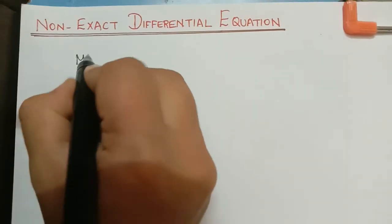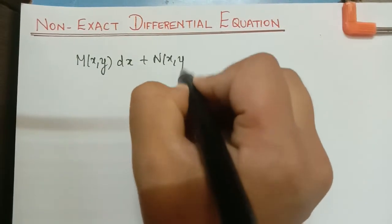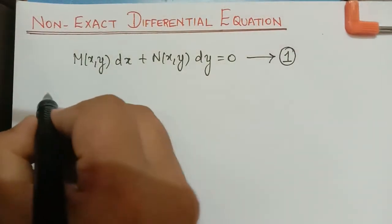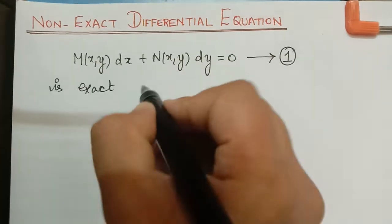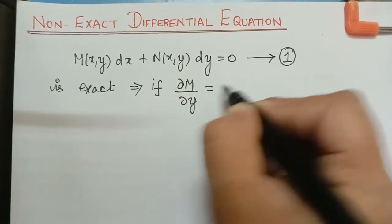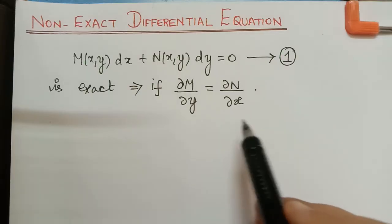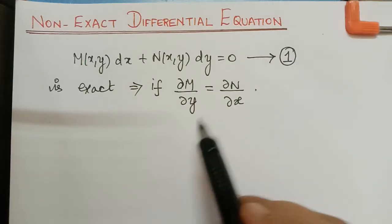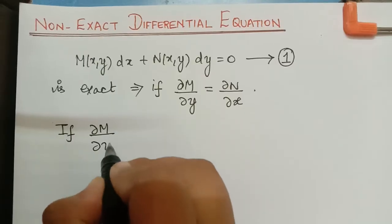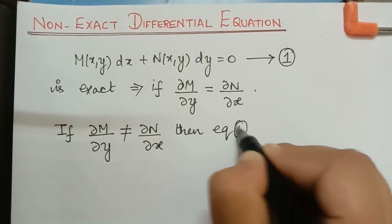We will consider a differential equation M(x, y)dx + N(x, y)dy = 0. Let us mark this as equation 1. We know that this equation is said to be exact if it satisfies ∂M/∂y = ∂N/∂x. So if this condition is satisfied, then equation 1 is said to be exact, and the method of solving an exact equation we have already seen in our previous videos. Now, if this condition is not satisfied — that is, if ∂M/∂y is not equal to ∂N/∂x — then equation 1 is said to be non-exact.